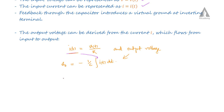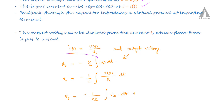So here we can write: V0 is equal to minus 1 by C, integral of V(T) by R into dT. Now V(T) is the input voltage, so we can simply write the output voltage V0 is equal to minus 1 by RC, integral of Vin dT, plus A, where A is the integration constant.